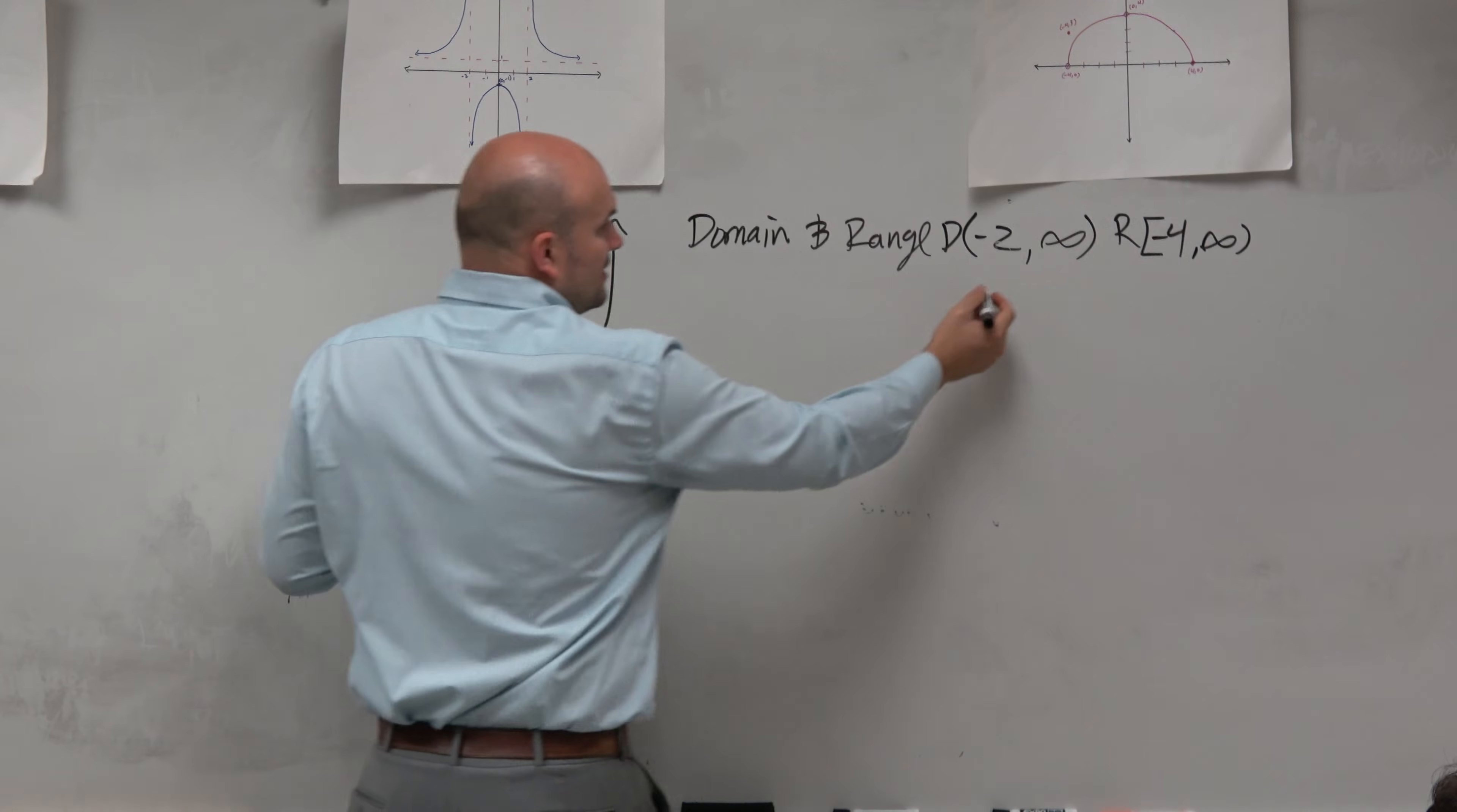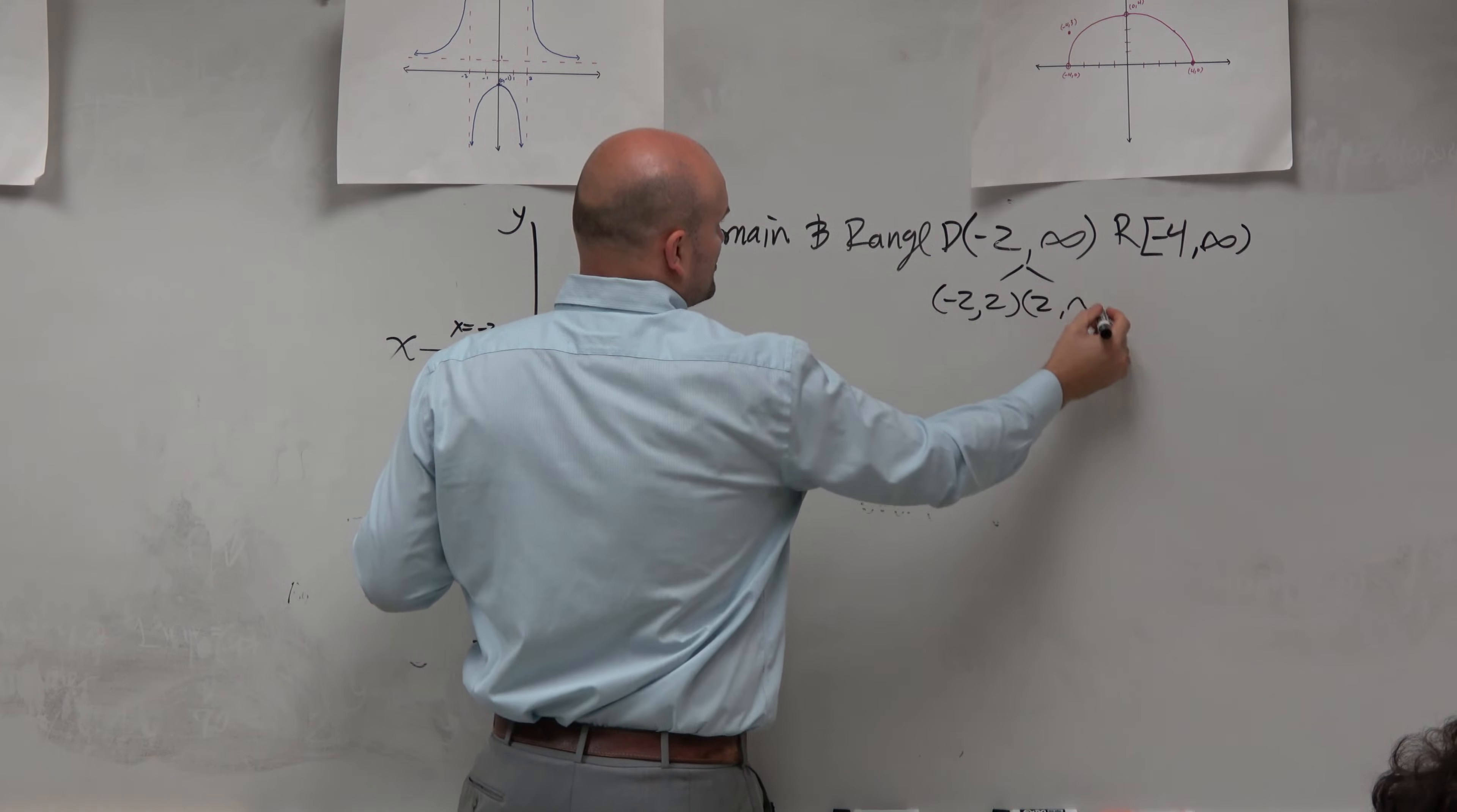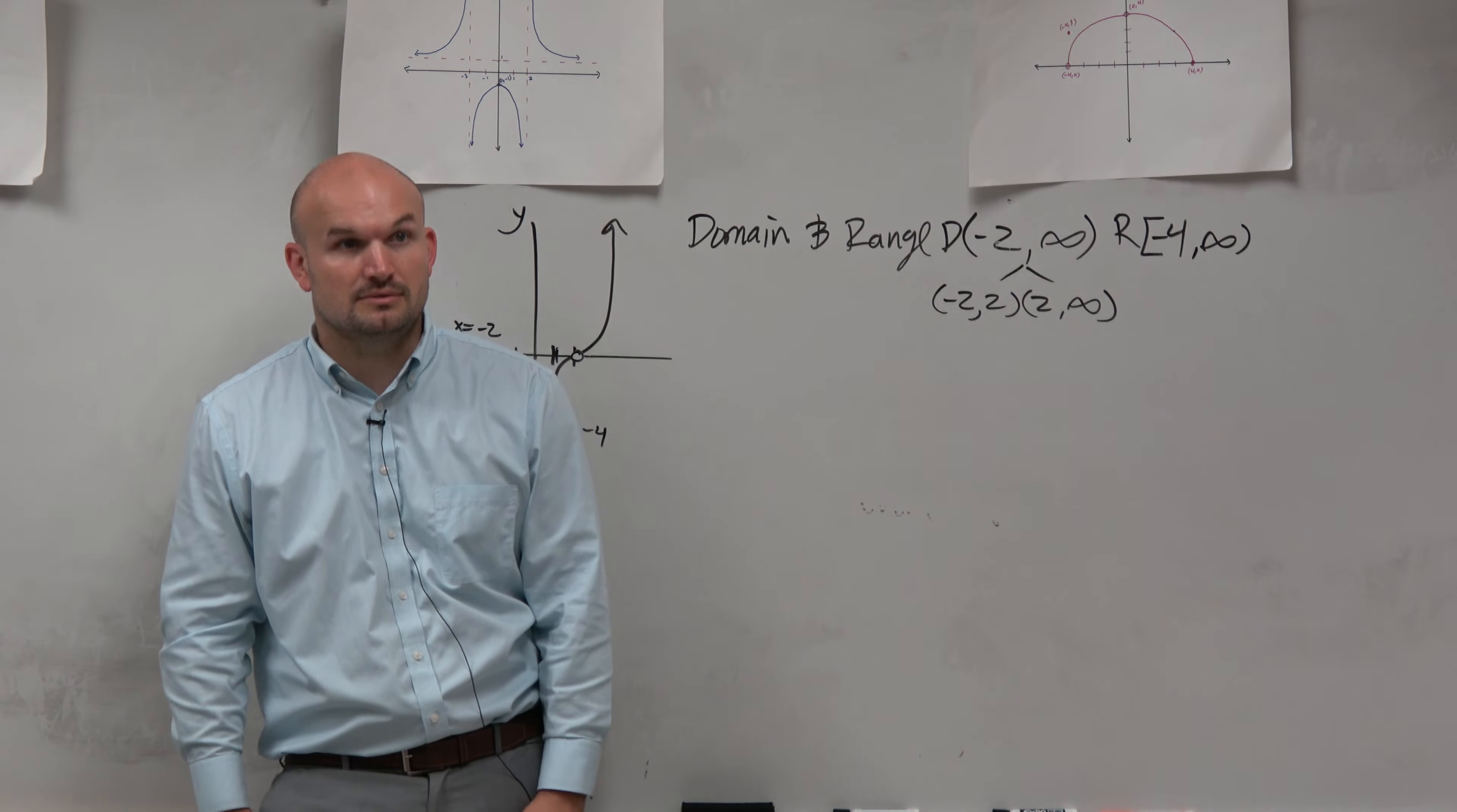What I'd have to do here is basically explain the domain to the left of the discontinuity and explain the domain to the right of the discontinuity. So this domain would now be changed from negative 2 to 2 and then 2 to infinity. If that doesn't make sense, raise your hand. I'll be more than happy to further explain.